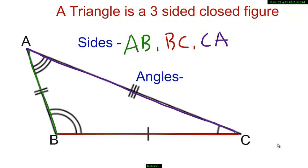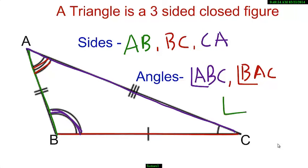The angles of the triangle are angle ABC. You can see right here is angle ABC. Angle BAC, we have it here. And angle ACB, I have marked it here for you.